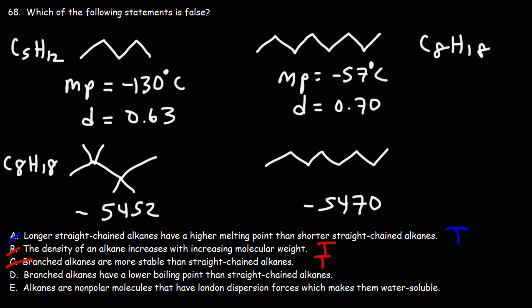The heat of combustion tells us which one is more stable. Branched alkanes are indeed more stable than straight-chain alkanes, and the reason is because they have lower heats of combustion, that is, lower absolute value of the heat of combustion.